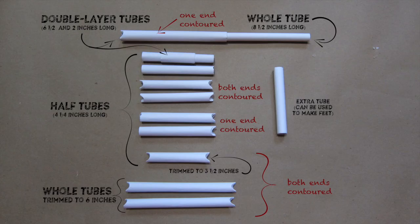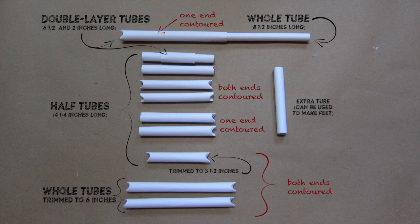Daphne here from STEAM Design Lab with part two of our paper catapult design project. In the first video I showed you how to roll two different types of paper tubes. We ended up with the pieces shown here.